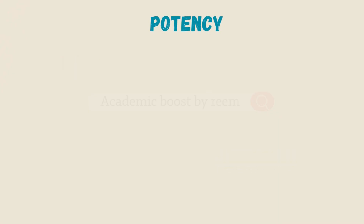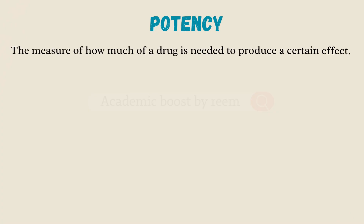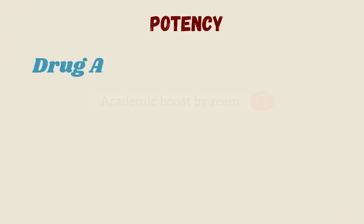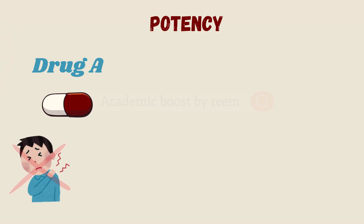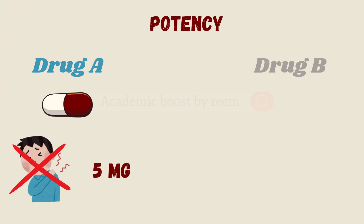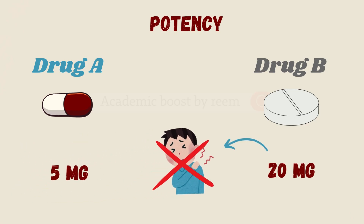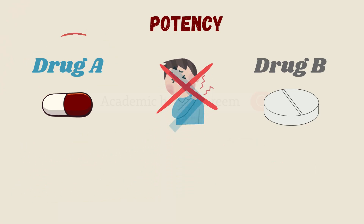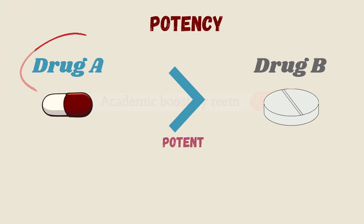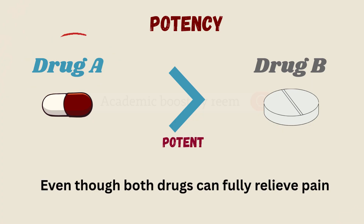Let's start with potency. Potency is a measure of how much of a drug is needed to produce a certain effect. Imagine drug A relieves pain completely at 5 milligrams while drug B requires 20 milligrams to achieve the same effect. So we say that drug A is more potent than drug B, even though both drugs can fully relieve pain.